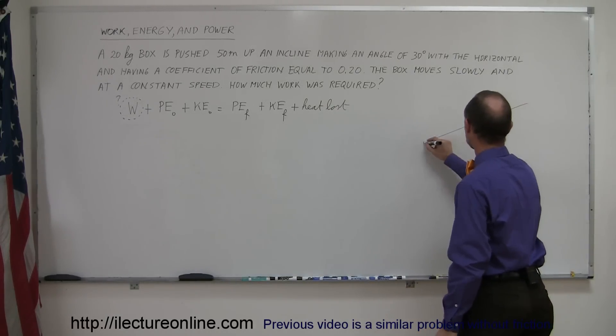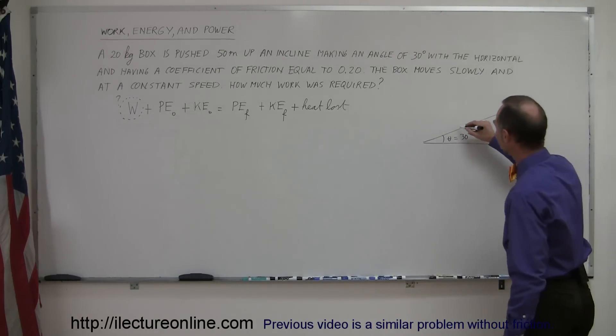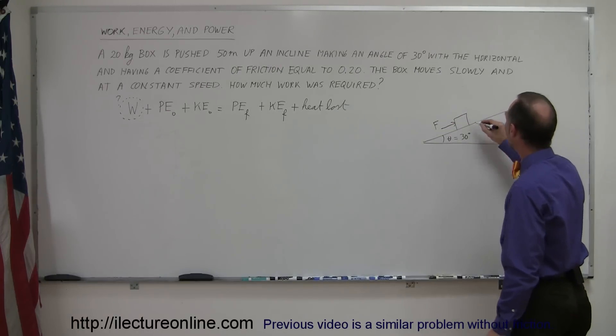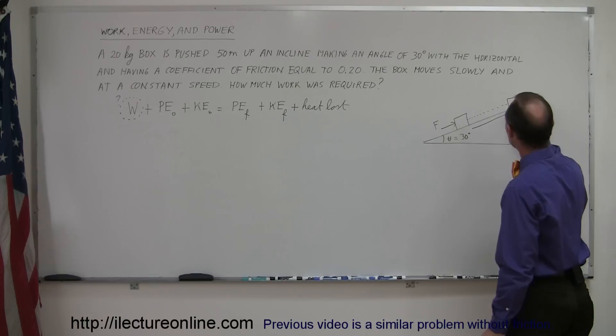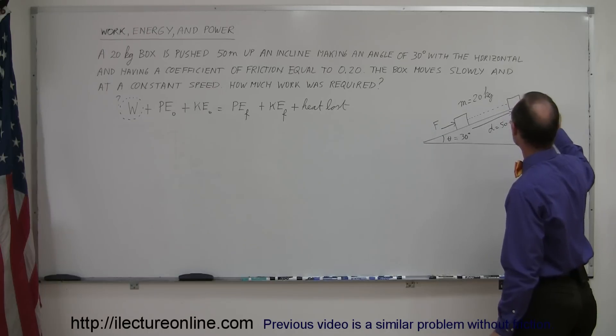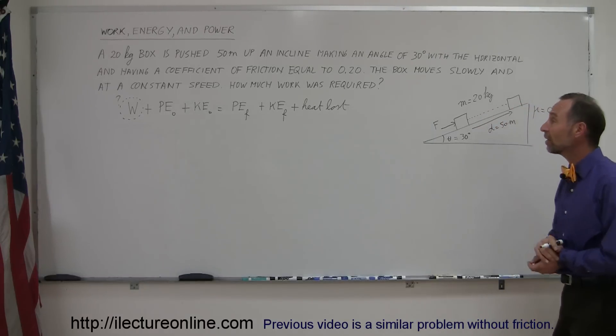so here's the incline, the angle is 30 degrees, we have a box, the box is being pushed up by some force, and moves a distance of 50 meters, so the displacement D is equal to 50 meters of the incline, the mass of the box is known, the mass is equal to 20 kilograms, and indeed there's a coefficient of friction mu equal to 0.20. I think that's all we know, got the angle, we got everything. Alright, so let's see how we do this problem.